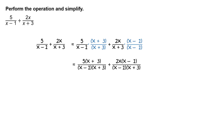Multiply. You will get 5 times the quantity x plus 3 divided by the quantity x minus 1 times the quantity x plus 3, plus 2x times the quantity x minus 1 divided by the quantity x minus 1 times the quantity x plus 3.